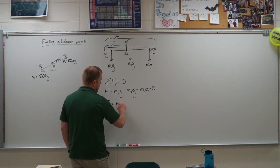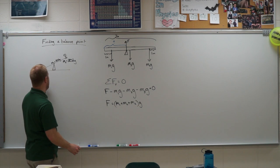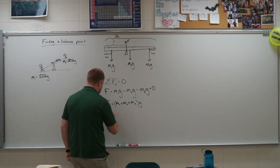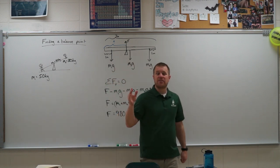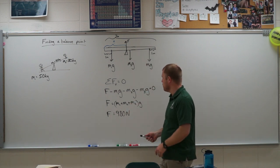And so I have M1 plus M2 plus M3 all times G. And so if I add those up, I have 50 plus 20 plus 30. So I get 100 times 9.8 gives me 980 newtons. So the fulcrum does have to support 980 newtons in order for this teeter-totter to work properly.